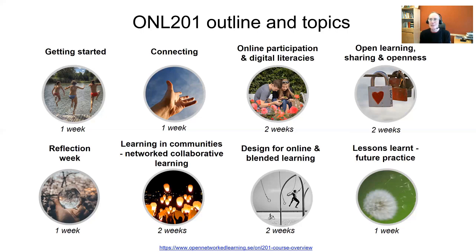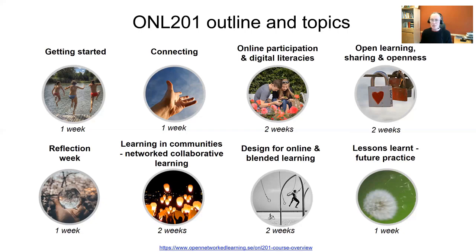You may be interested to find out how the course is structured from week to week. Here's a diagram — it looks a bit complex, but the course is 12 weeks. At the top line you can see the different topics outlined, and here are the different spaces where you'll be working. You'll be working as a large community for the whole course in the ONL 201 community space, which is like a discussion forum where you can interact with all participants. From the second week you'll be working mostly in your PBL groups, with intensive discussion, exchange of ideas, and collaborative work.